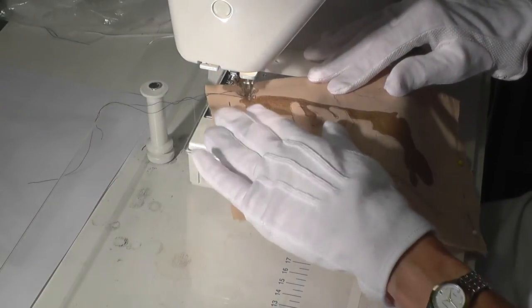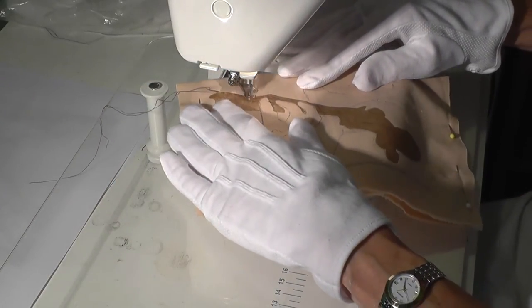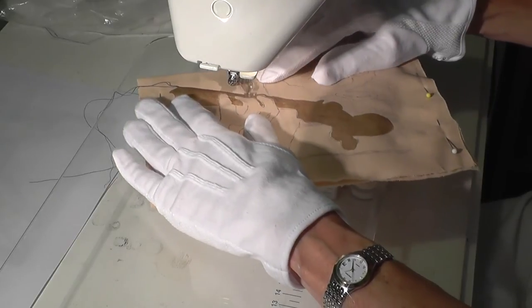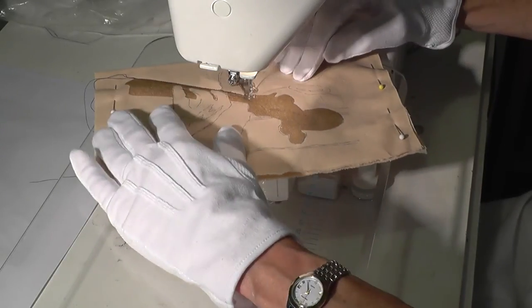The applique piece sits behind the hand, so stitch that down first. Where practical, work from the background to the foreground with your stitching.